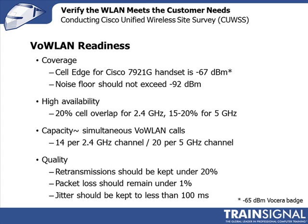It could be a weak signal or no signal at all. It could be when the device can hear the access point but the access point can't hear the device. It could even be a problem with the way the network has been configured to support quality of service — maybe some of the mapping between the class of service on the wired network and on the wireless network have not been done correctly. So there's a range of different problems that could occur.